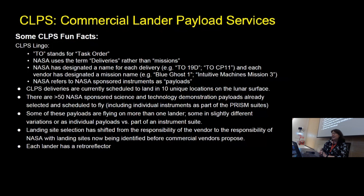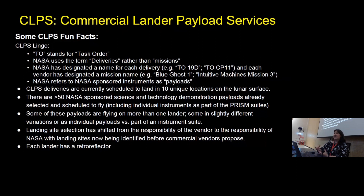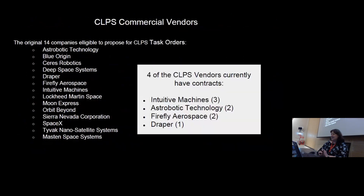The landing site selection was originally the responsibility of the vendor, but as the CLPS program has progressed, that's now the responsibility of NASA, down to choosing the location of that 100-meter diameter ellipse — selected before the commercial vendors even propose. Each lander has a retro reflector. The original 14 companies eligible to propose to CLPS task orders are listed, and the four CLPS vendors that currently have contracts are Intuitive Machines, Astrobotic, Firefly Aerospace, and Draper.